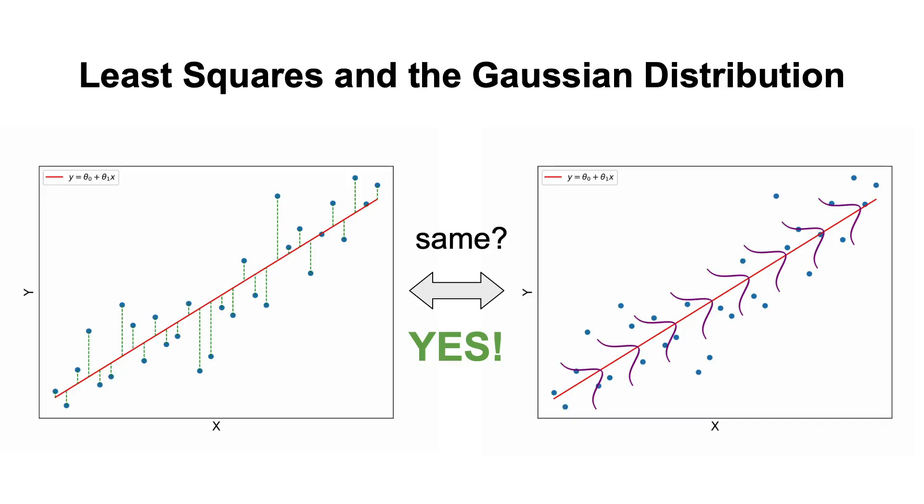In other words, when you use the least-squares method to find the best-fitting model, we are implicitly assuming that each data point is drawn from a Gaussian distribution, with a mean that lies on the regression line.